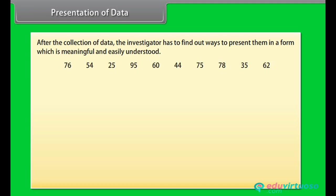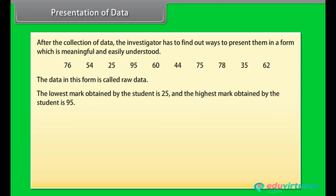The data in this form is called raw data. The lowest mark obtained by the student is 25 and the highest mark obtained is 95. If we write these numbers in ascending or descending order, then it would be easy for us to see the highest or the lowest marks.